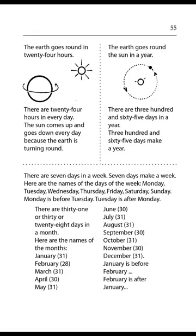Here are the names of the days of the week: Monday, Tuesday, Wednesday, Thursday, Friday, Saturday, Sunday. Monday is before Tuesday. Tuesday is after Monday. There are 31 or 30 or 28 days in a month. Here are the names of the months.